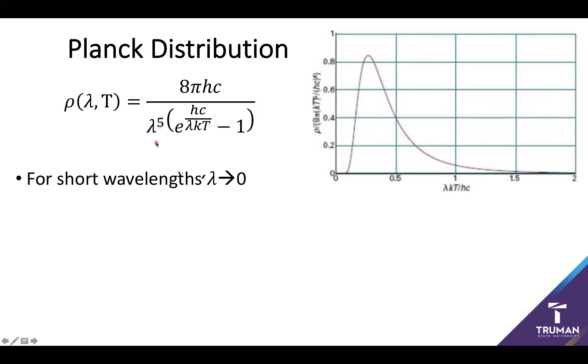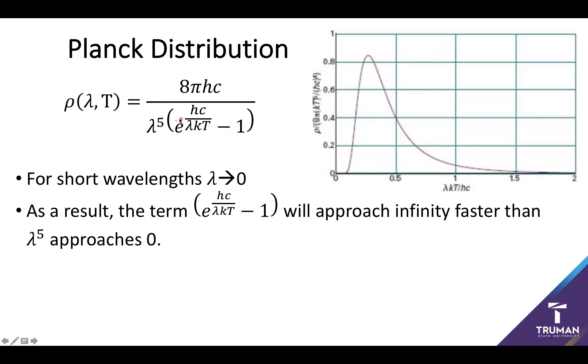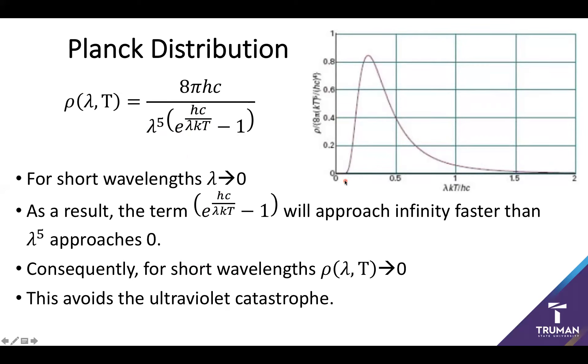But we also have this exponential term. As wavelength goes to zero, this term goes to zero, which means that my exponential essentially starts going to infinity. What ends up happening is that my exponential is going to go to infinity faster than my polynomial term approaches zero, which means that I can approximate this whole bottom term as infinity. Anything divided by infinity should essentially give a value of zero. So at short wavelengths, my whole spectral density should go to zero. And congratulations, this is what we predict, and it avoids the classical physics problem of the ultraviolet catastrophe.